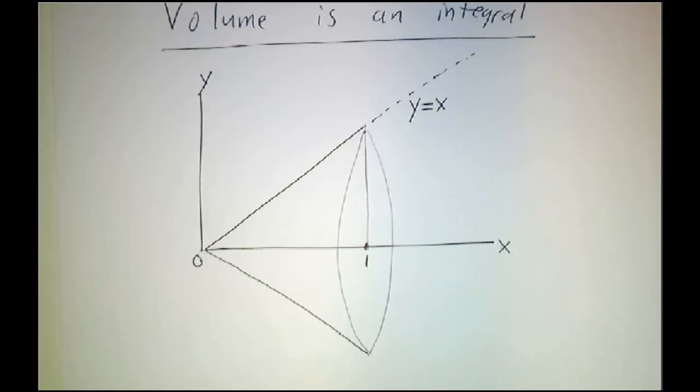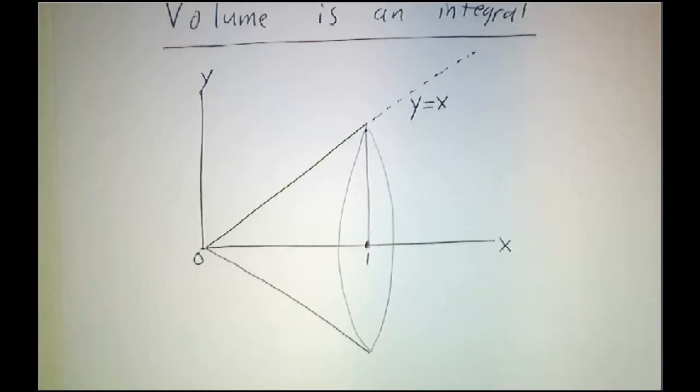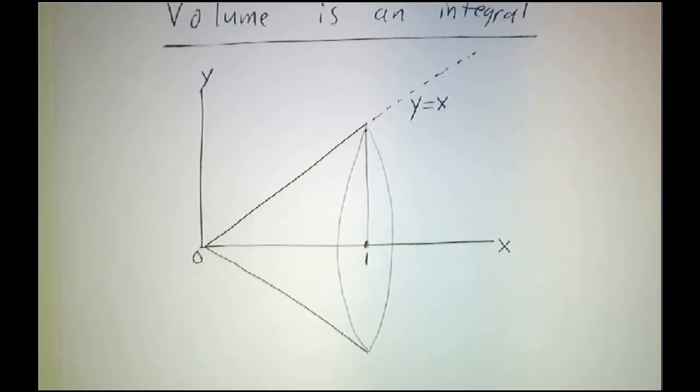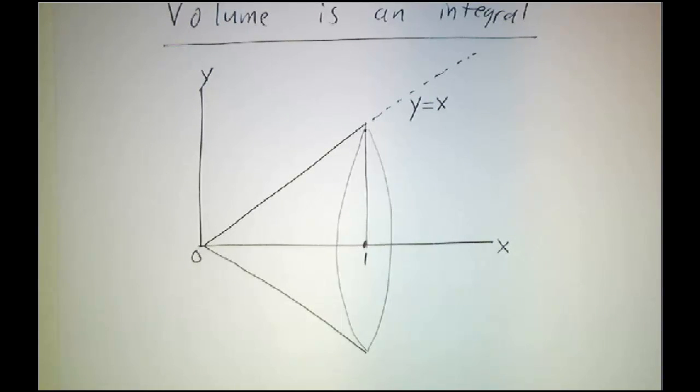We're going to take this to the deli. We're going to think of this as the shape of a piece of roast turkey or ham. We're going to put it into the meat slicer, and we're going to slice it into a bunch of pieces. We're going to figure out the volume of each piece, and then we're going to add them up.